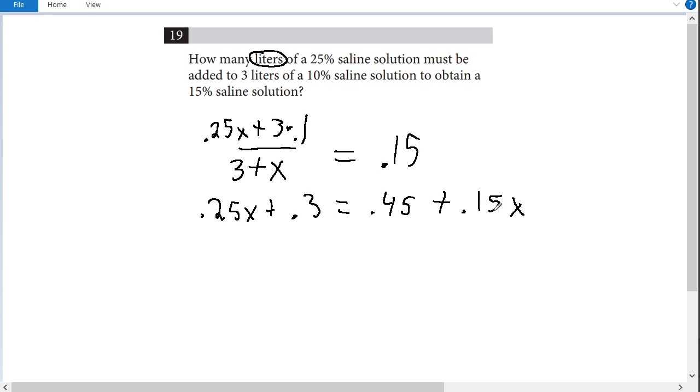Now to solve, I want to get all of my x's on one side and all of my non-x's on the other. So I'll subtract 0.15 from 0.25 to get 0.1x. And what's that going to equal? Well let's do the same thing on this side. 0.45 minus 0.3 is 0.15.